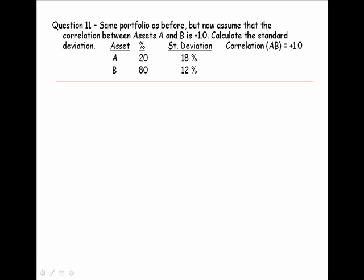Okay, question number 11. Same portfolio as before, but now assume that the correlation between the two assets is positive 1.0. Calculate the standard deviation. Again, the only change is that the correlation between these assets is positive 1.0. Let's start with our formula.